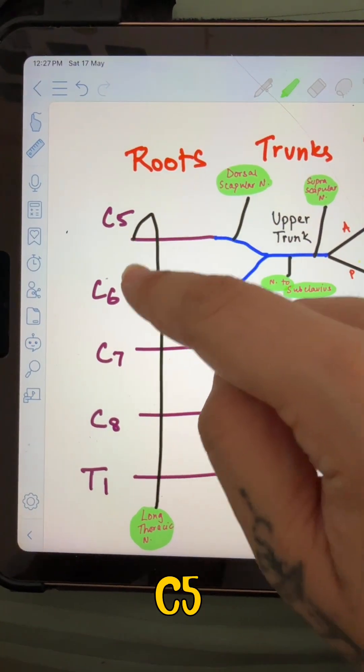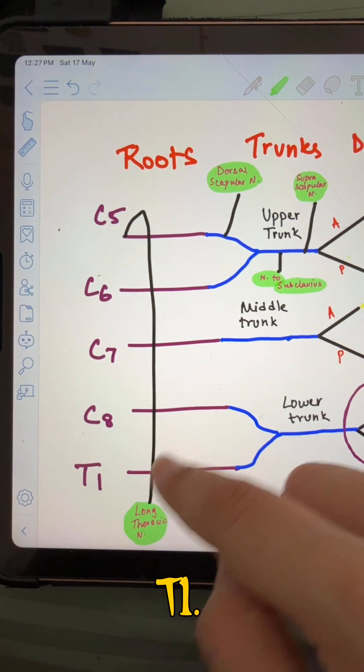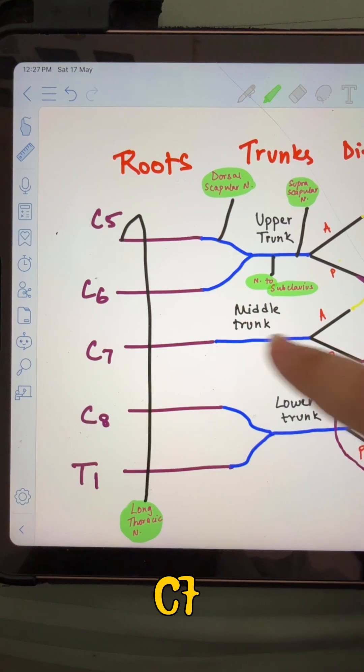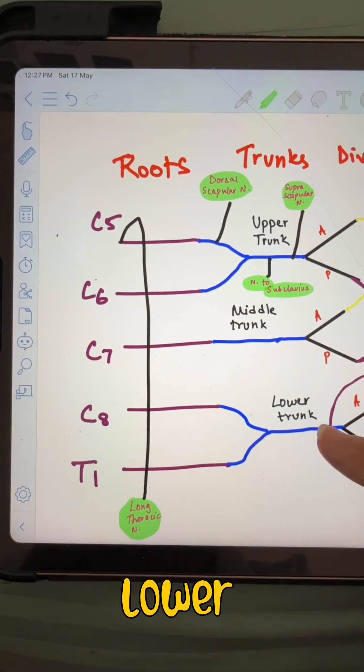For the roots, we have C5, C6, C7, C8 and T1. Roots are done. Trunks, C5, C6 forms the upper trunk, C7 forms the middle trunk, C8 and T1 form the lower trunk.